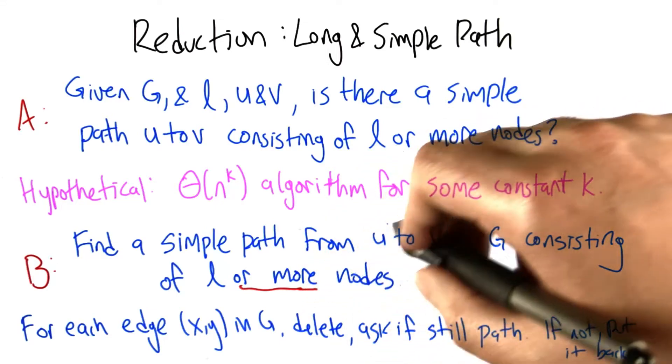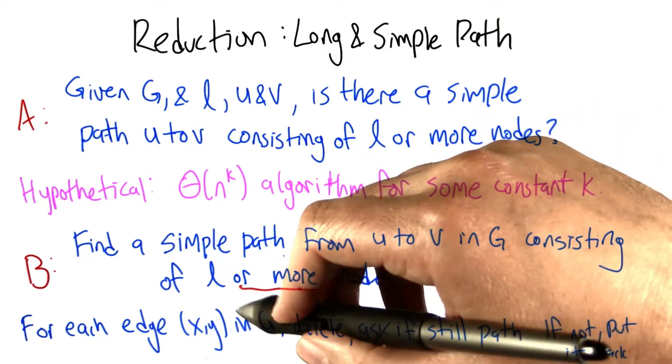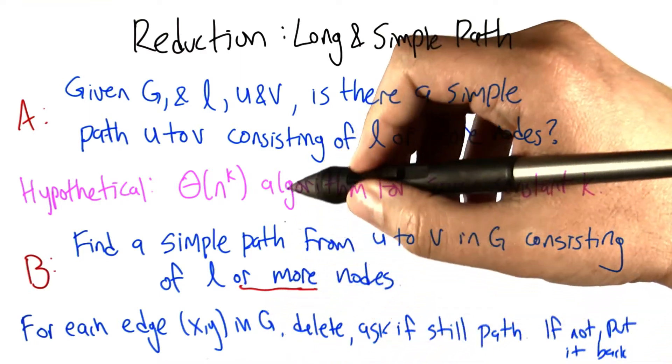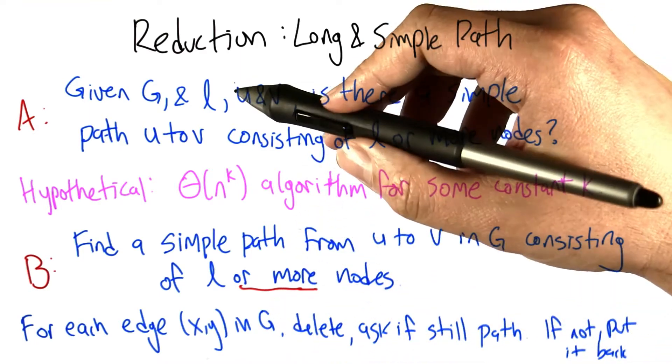So here's the strategy that I would suggest. There's probably a couple different ways to do this. We could take the original graph that we know there is some length L path, simple path from U to V.